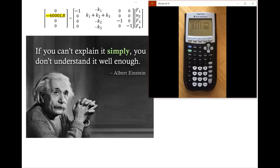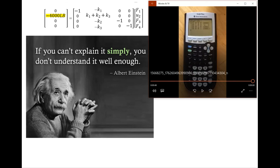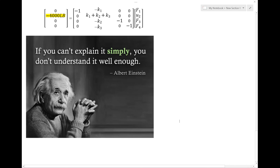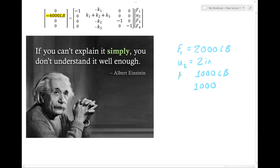So I have 2000, 2, and then 1000, 1000 — so I have 2000, 2, 1000, and 1000 again. That represents F1, F2, F3, and F4. And we're done.